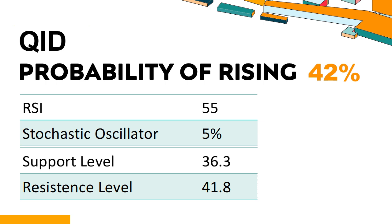When the probability of rising is lower than 50%, it means that the probability of falling is relatively high. If the probability of rising is higher than 50%, it means that the probability of stock rising is relatively high. Combining multiple technical analysis indicators, QID has 5 bullish signals and 3 bearish signals. QID's short-term support level is 37. If it falls below 37 during this session, it will have a chance to test 36.3.